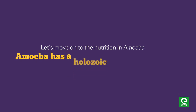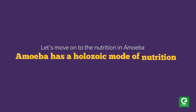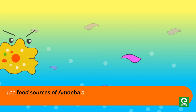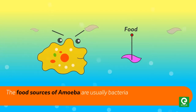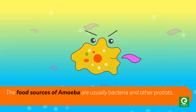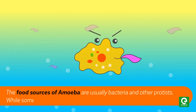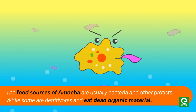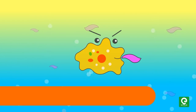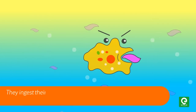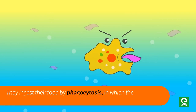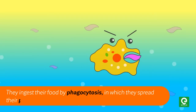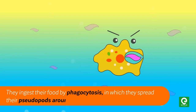Amoeba has a holozoic mode of nutrition. The food sources of amoeba are usually bacteria and other protists, while some are detritivores and eat dead organic material. They ingest their food by phagocytosis, in which they spread their pseudopods around a food particle and engulf it.